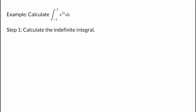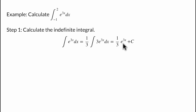We close with one more example: let's calculate the definite integral of an exponential, the integral from negative 1 to 2 of e to the 3x dx. The first step is to calculate the indefinite integral of e to the 3x. It's easier to calculate the antiderivative of 3 times the exponential, because when we differentiate e to the 3x, a 3 comes down. So we multiply and divide by 3, writing the integral as 1/3 of the integral of 3 times the exponential. The antiderivative of 3 times e to the 3x is simply e to the 3x, and the 1/3 comes along for the ride. Since we are computing a definite integral, the arbitrary constant c will cancel out, so we set c to 0.